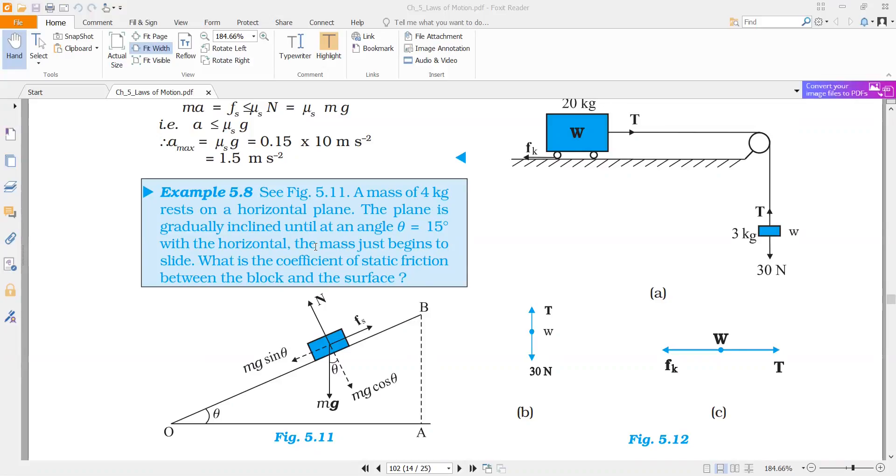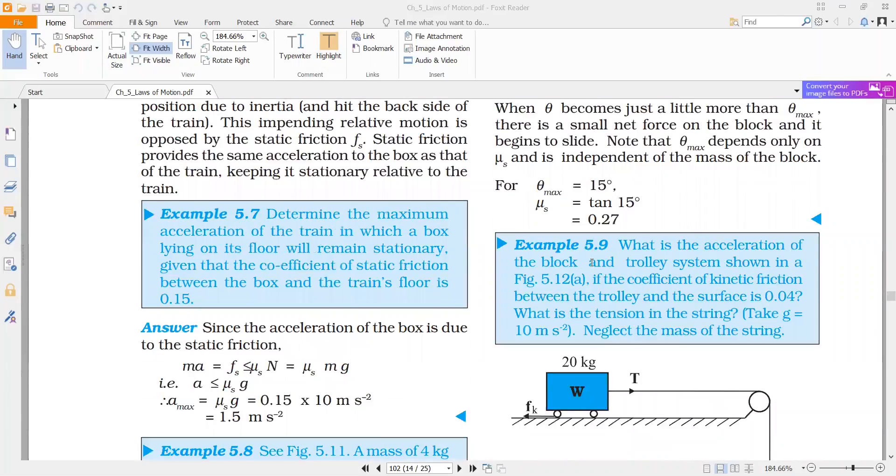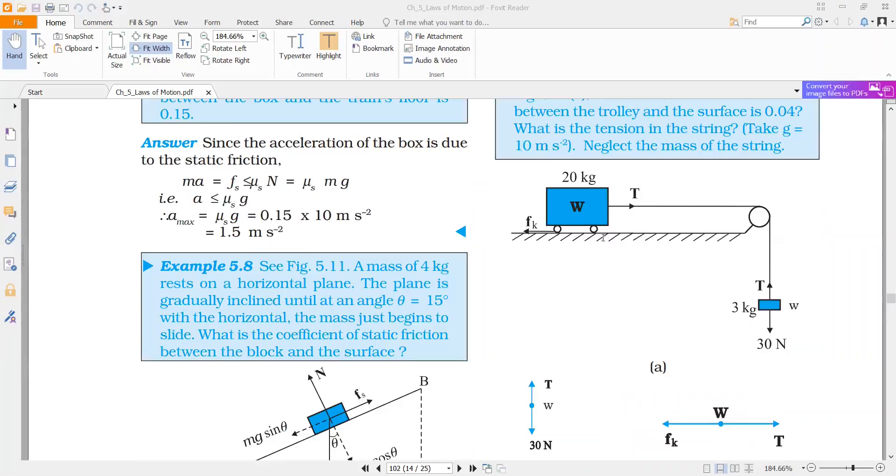And you solve this. This comes out to be 0.27. So the coefficient of friction as per the question comes out to be 0.27.